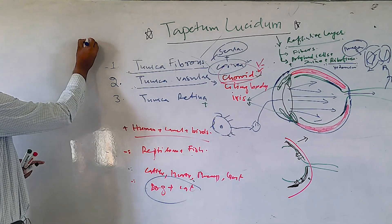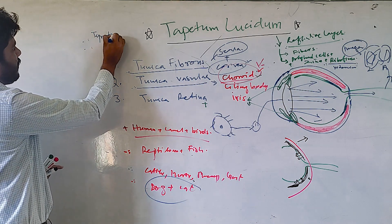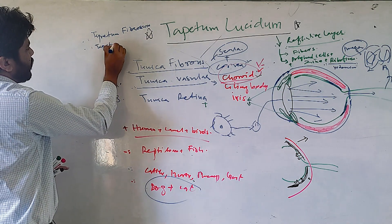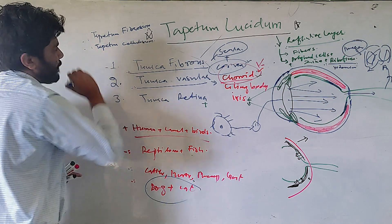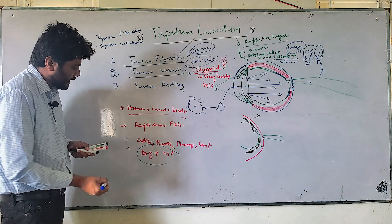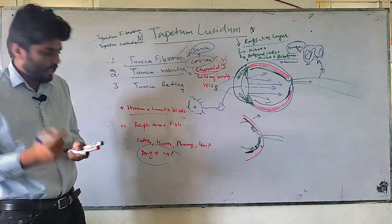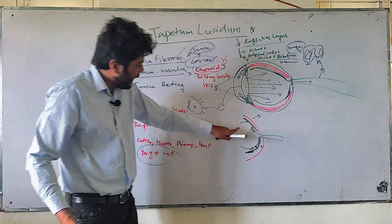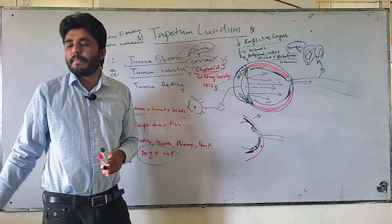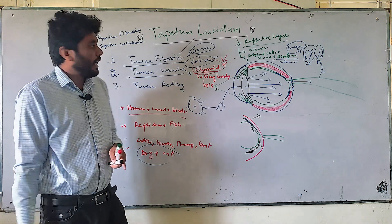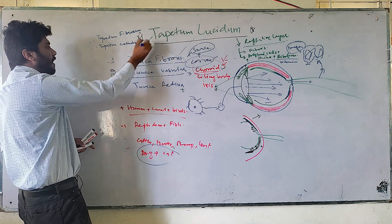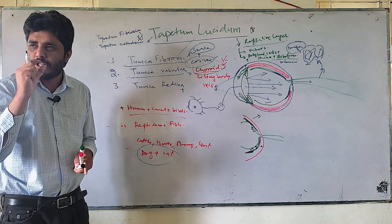Two important terms you may encounter when studying the histology of tapetum lucidum are tapetum fibrosum and tapetum cellulosum. It is believed that in herbivorous species like cattle, sheep, and goat, the tapetum lucidum mainly consists of connective tissue fibers — this is tapetum fibrosum. In carnivores like dog and cat, the tapetum lucidum mainly consists of a polyhedral cellular layer — this is tapetum cellulosum.